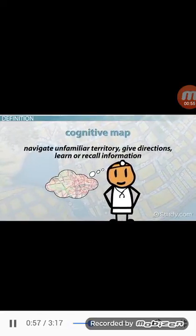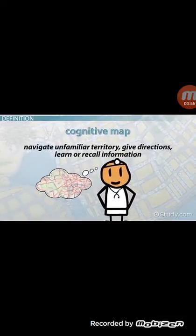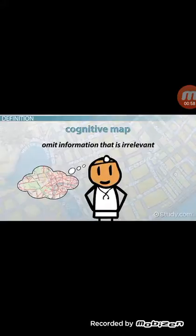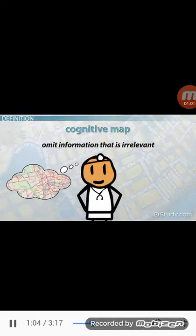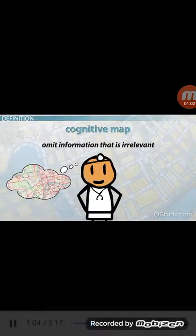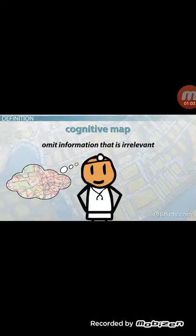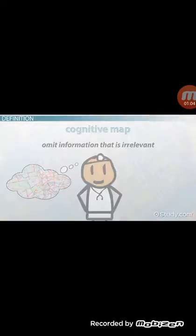When we create cognitive maps, we often omit information that is irrelevant to the task at hand. This means that they can differ from the actual environment we are mapping.